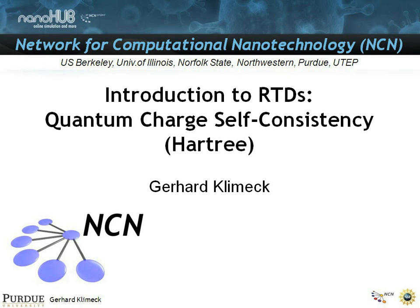This lecture segment deals with quantum charge self-consistency. Previously I had shown you a linear potential drop — that was a Mickey Mouse device with no real charge. Then I showed you that if you consider semi-classical charge you see strong band bending and charge. And then we dealt with the filling of the emitter states due to the triangular well from the realistic charge. Now we're going to make the charge more realistic using quantum charge instead of semi-classical charge.